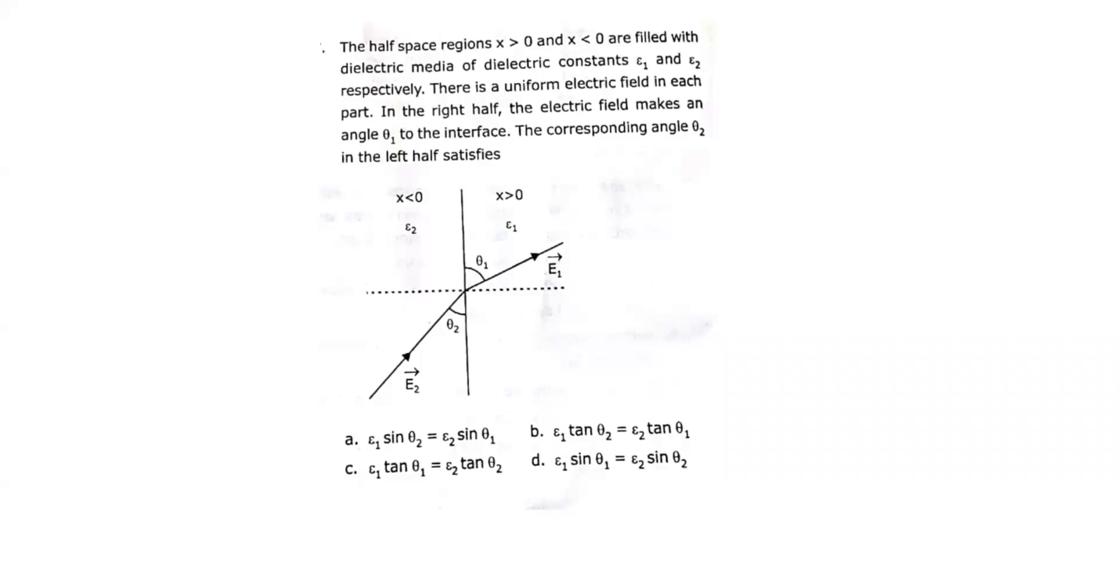The half regions x > 0 and x < 0 are filled with dielectric media of different dielectric constants ε₁ and ε₂. There is a uniform electric field in each part. In the right part, the electric field makes an angle θ₁ to the interface; the corresponding angle in the left-hand side is θ₂.